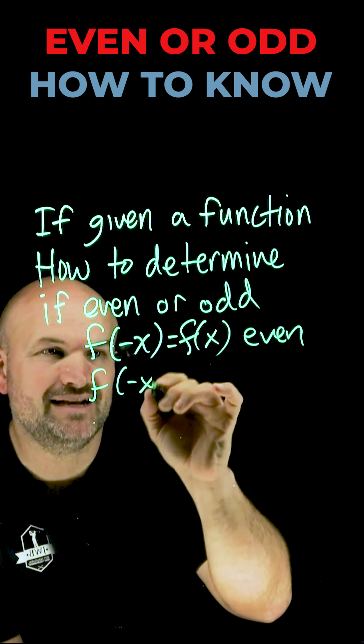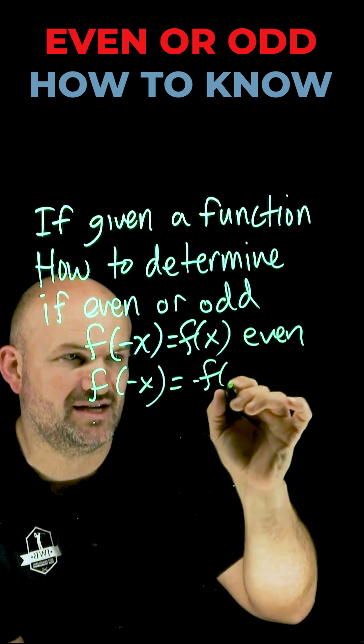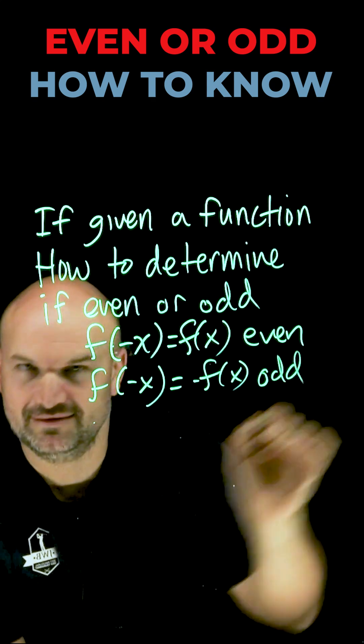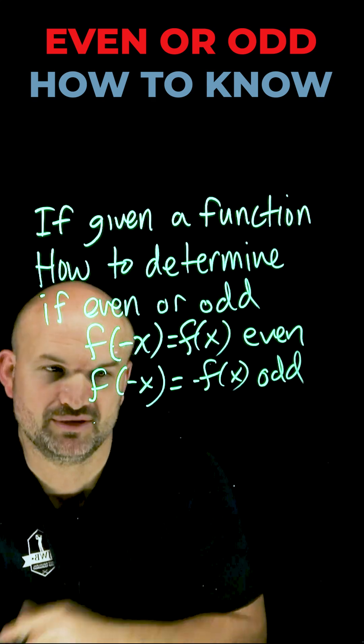If you plug in a negative x and you get the opposite of that function, that function is now considered odd. Let's go and take a look at two simple examples.